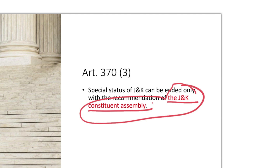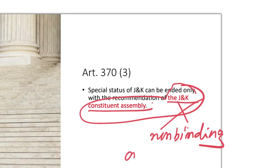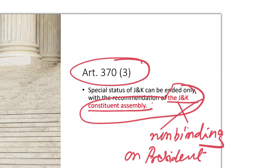But the Supreme Court looked at this differently. First, the Constituent Assembly was not there, but more importantly, even if it had been, its recommendation was non-binding on the President. The President can end special status using Article 373 with or without the Constituent Assembly's recommendation. This is a completely different and unusual interpretation that nobody had previously put forward.